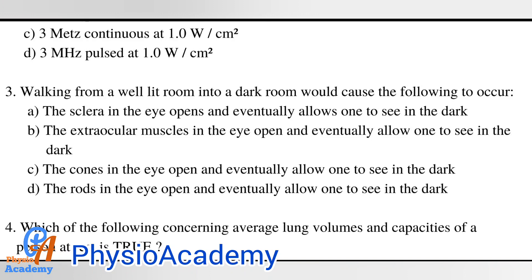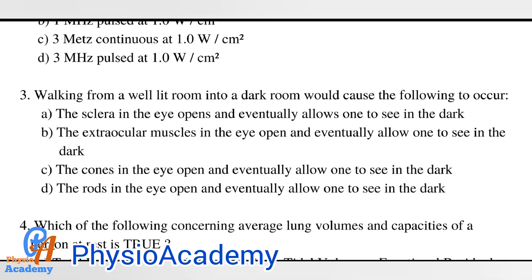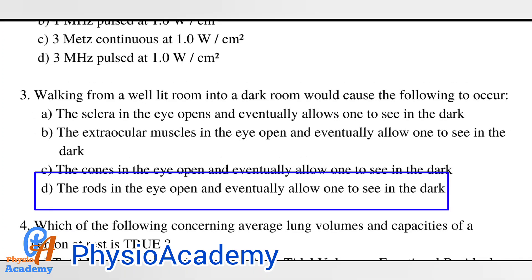Question number three: walking from a well-lit room into a dark room would cause the following to occur. Option A: the sclera in the eye opens and eventually allows one to see in the dark. Option B: the extraocular muscles in the eye open and eventually allow one to see in the dark. Option C: the cones in the eye open and eventually allow one to see in the dark. Option D: the rods in the eye open and eventually allow one to see in the dark. The correct answer is option D: the rods in the eye open and eventually allow one to see in the dark.